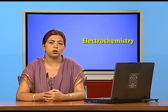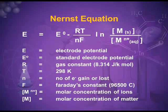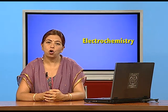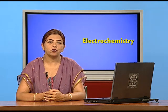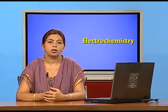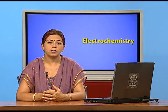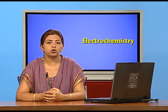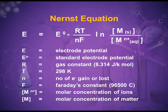Let me tell you the use of the various symbols. E is electrode potential. E naught is the standard electrode potential. R is the universal gas constant, whose value is 8.314 joules per kelvin per mole. T is 298 kelvin, that is 25 degrees Celsius.